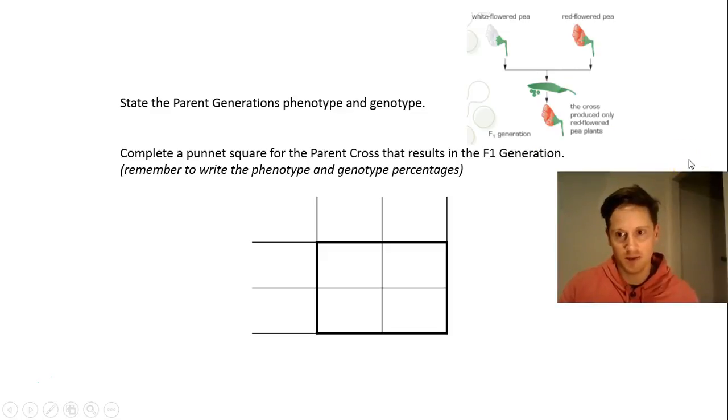So what I want you guys to do now is to draw up this grid in your book and we're going to work through a problem together. So now we're going to do the Punnett square for the parent cross that results in the F1 generation. We're going to cross two F1 generation flowers and see what the percentages are of the colours. Pause the video and draw a grid similar to this in your book.